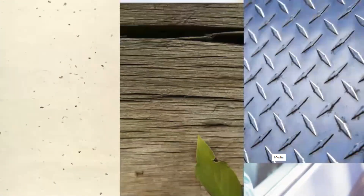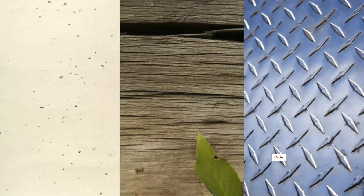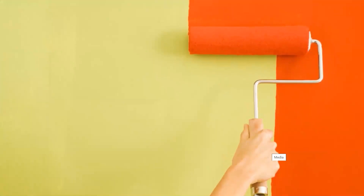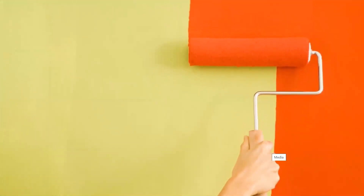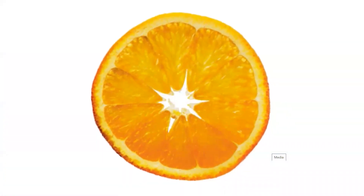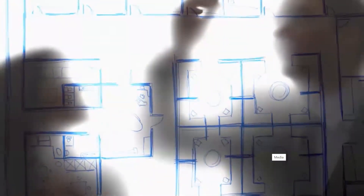When an object is opaque, light is unable to travel through it, therefore nothing can be seen behind it. Wood, concrete, and metal are examples of opaque materials. See how this opaque paint covers the previous color? That is because the material is blocking the light rays. Some objects let just a little light through and those are called translucent objects. For example, a piece of fruit like an orange slice or this frosted glass window.